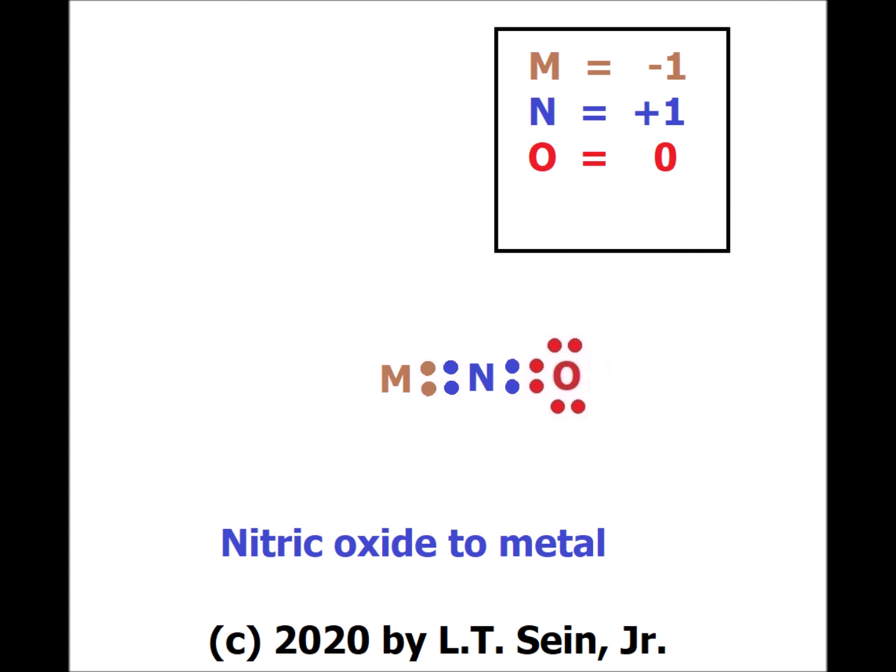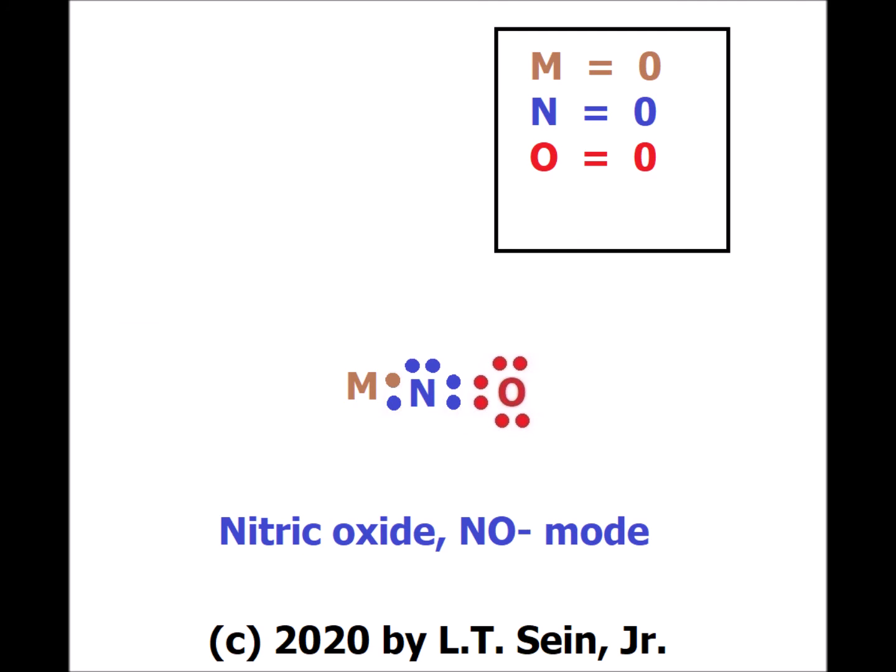Metals don't like to have a buildup of electron density because they are electropositive rather than electronegative. So the metal can backbond — it can backdonate a pair of electrons into a pi-antibonding orbital on nitric oxide — and becomes formally double-bound to the nitrogen. Now the formal charge on the metal is reduced to minus one, nitrogen is plus one, and oxygen is zero. The metal can push even more electron density onto nitric oxide, pushing a lone pair into an sp2-hybridized orbital on nitrogen, giving a trigonal planar configuration at nitrogen. We would notice that the NO ligand is bent, and because of this backdonation of a further electron pair, we refer to this as the NO-minus binding mode.